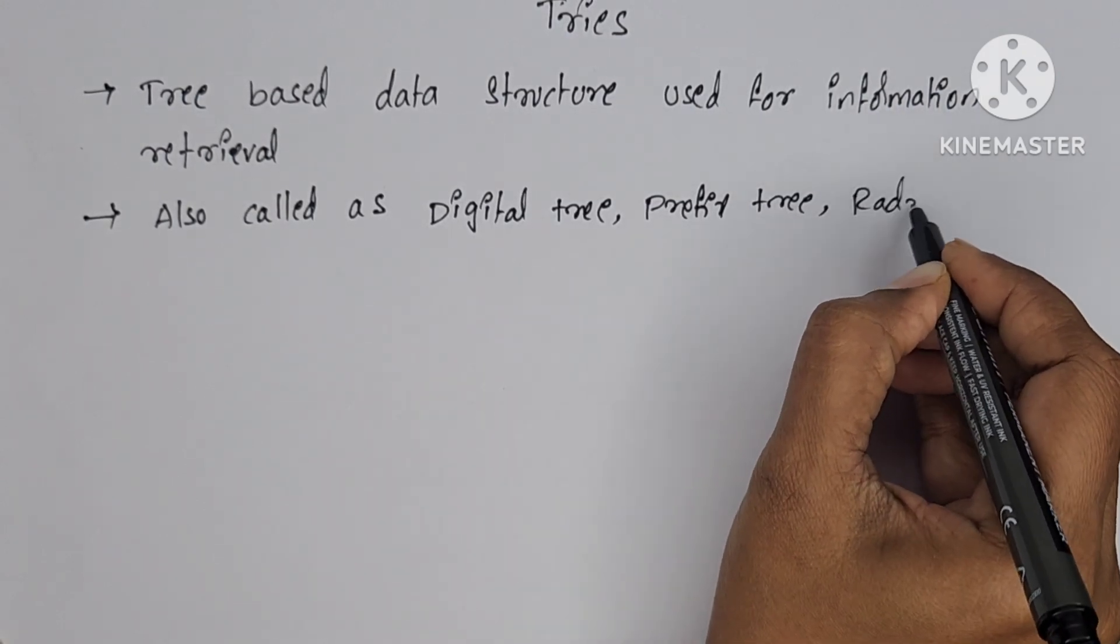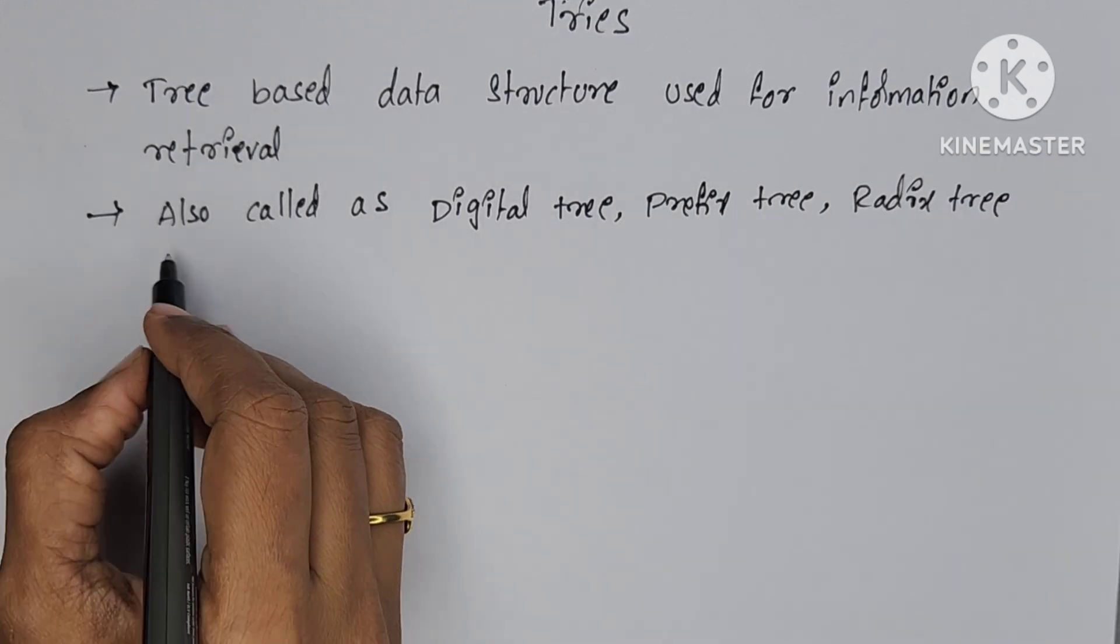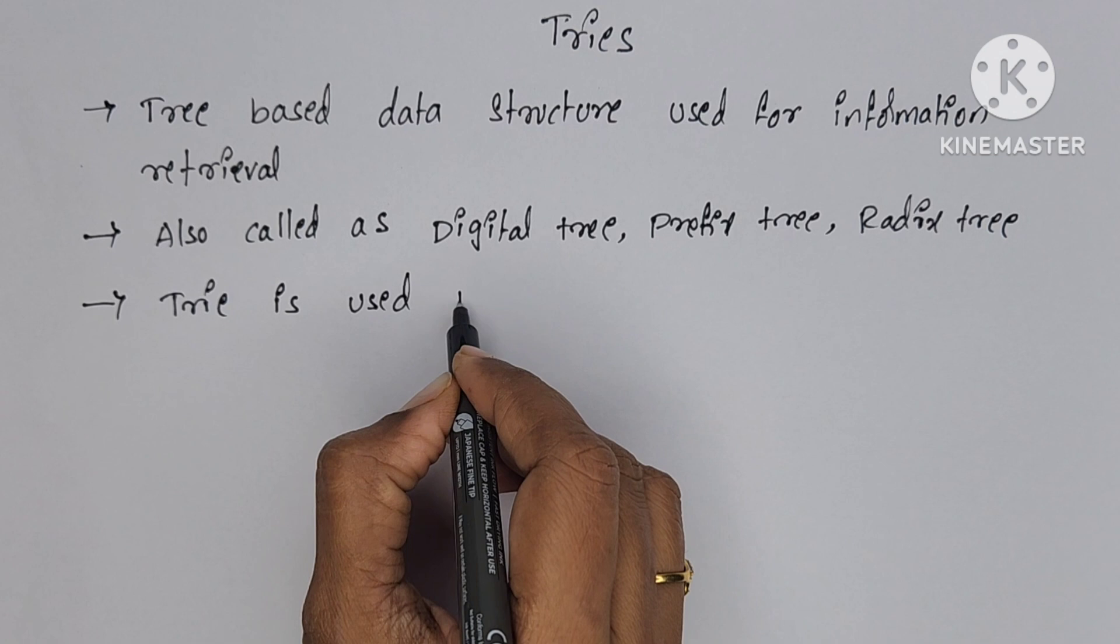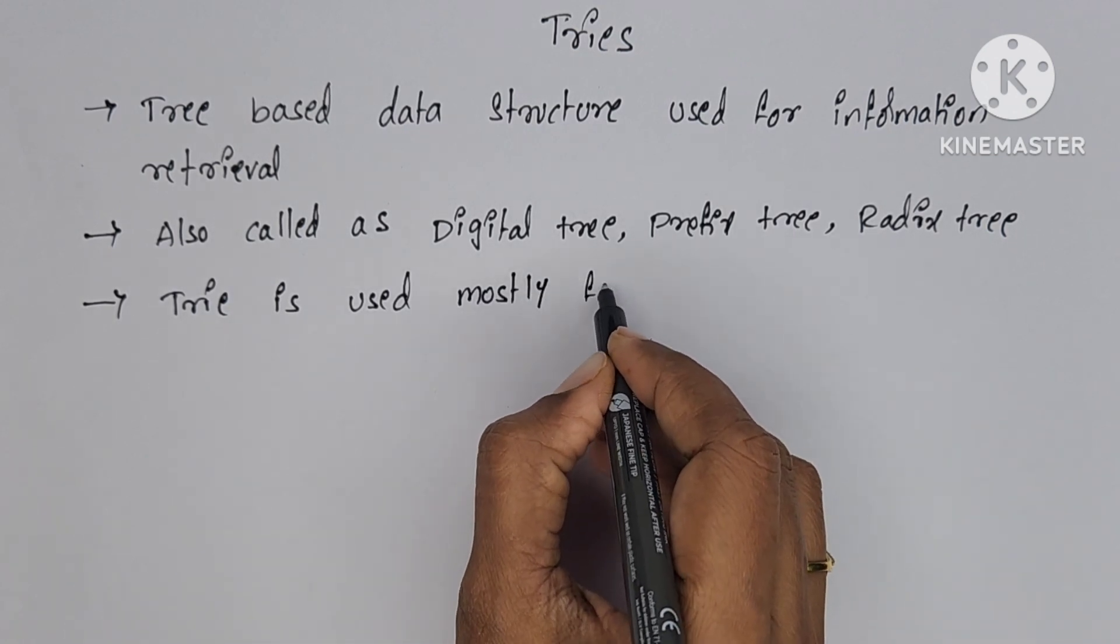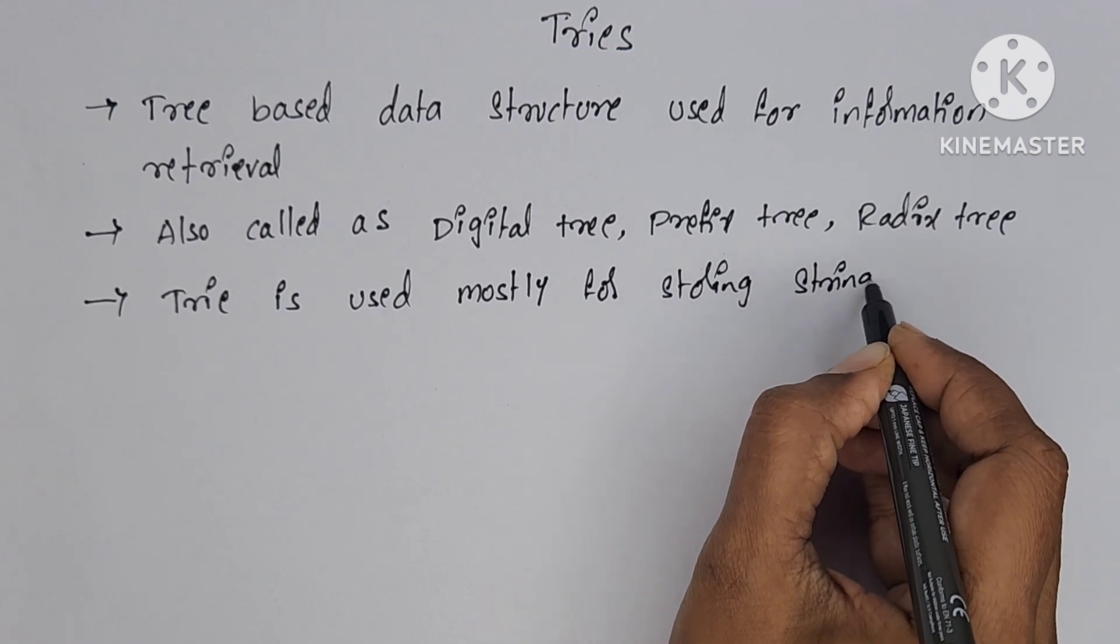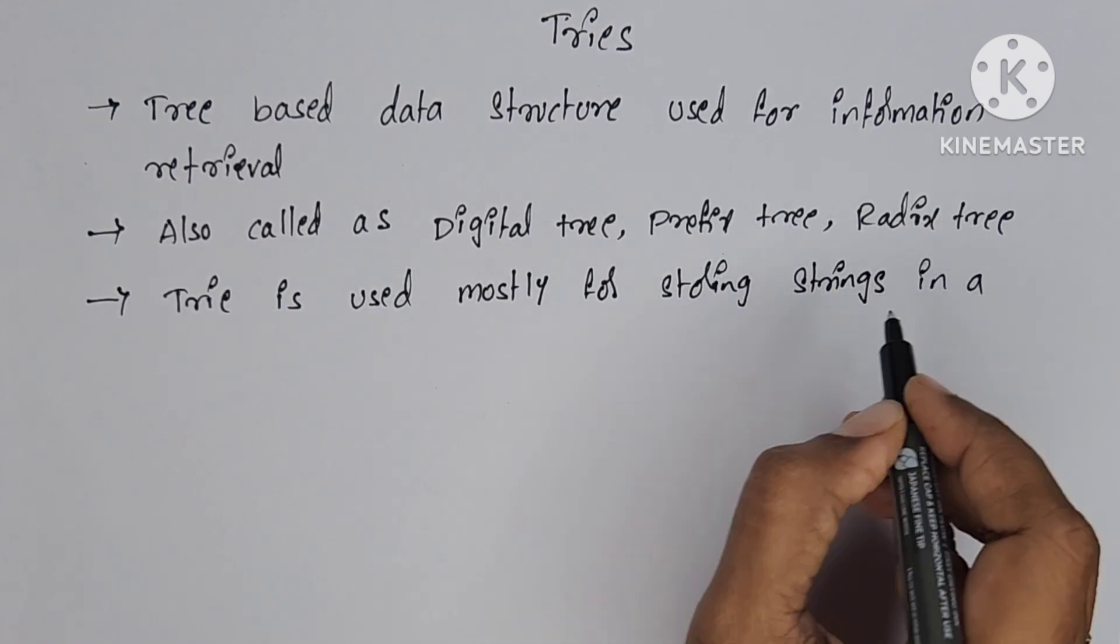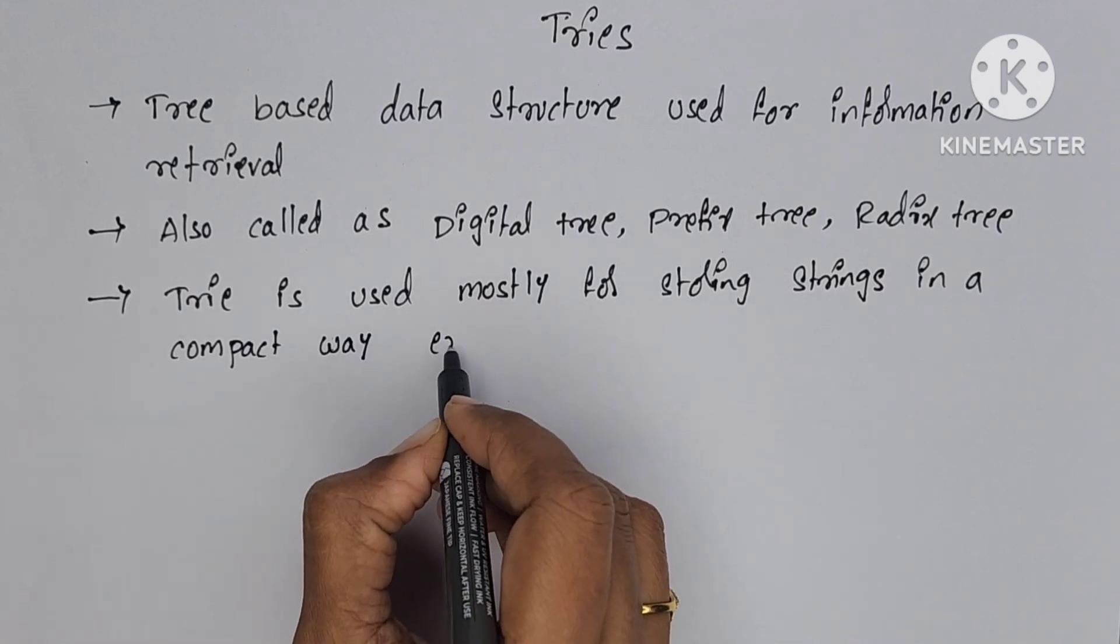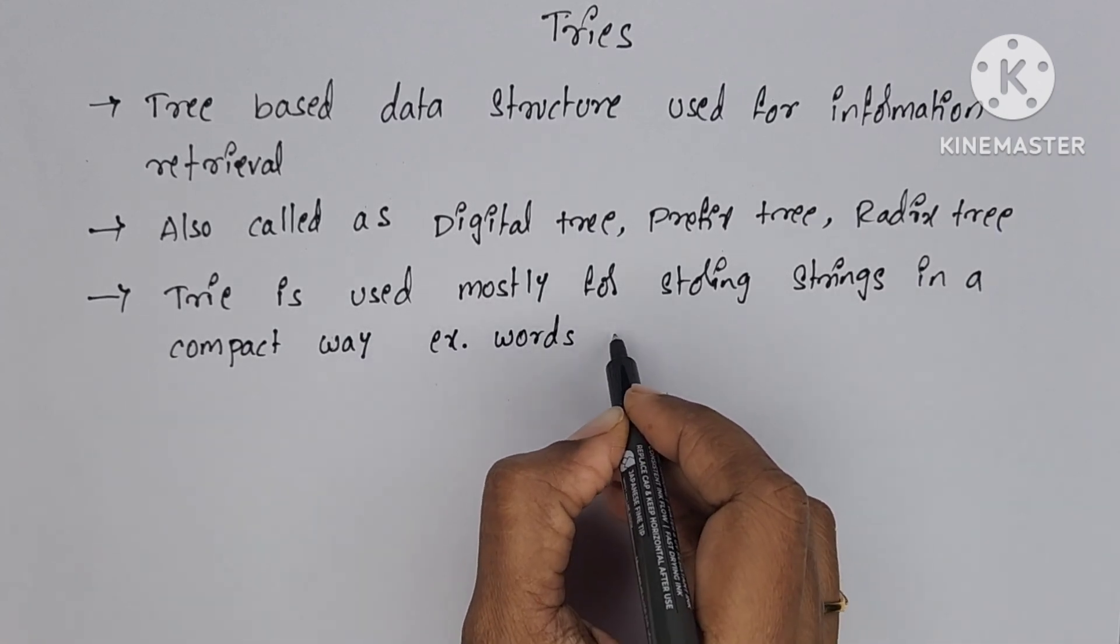Tries are mostly used for storing strings in a compact way, like a dictionary. Whenever we search a word in a dictionary, we search if the first character is matching, then check the remaining characters one by one.